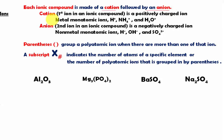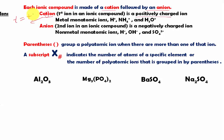What is a cation? A cation is the first ion in ionic compounds. It is a positively charged ion. Look at the T in 'cation' — that T looks like a positive sign symbol. So if you don't remember what a cation is, think of the letter T that reminds you of the positive sign.